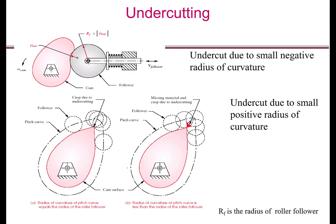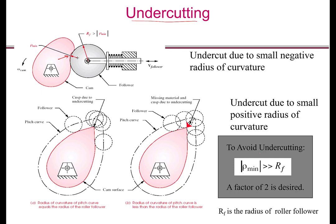The problem that can occur with roller followers if curvature is not chosen properly is undercutting. If the radius of curvature of the cam profile is negative, there can be two-point contact and the follower will never contact part of the cam, so motion will not be as desired. When the radius of curvature of the pitch curve equals the radius of the roller follower, a cusp forms causing point contact with high stress concentration. If the radius of curvature of the pitch curve is less than the roller radius, missing material results from undercutting. In general, to avoid undercutting, the minimum radius of curvature should be at least twice the radius of the roller.